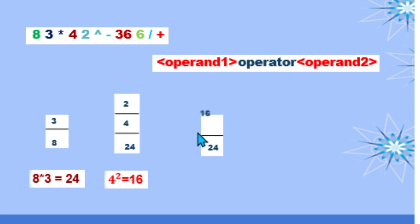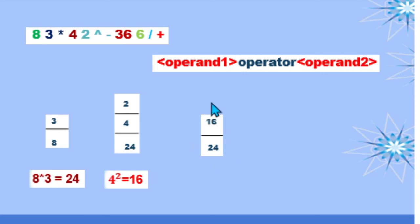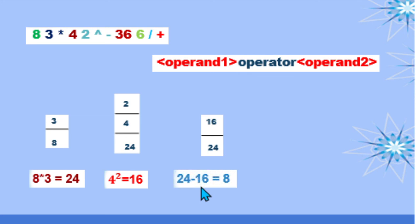We now have 16 on the stack and continue scanning. We have our subtraction operator — since it is an operator, we pop out the last two operands from our stack and perform subtraction. Operand 1 is 24 and operand 2 is 16. So 24 minus 16 is equivalent to 8. We push 8 on our stack.